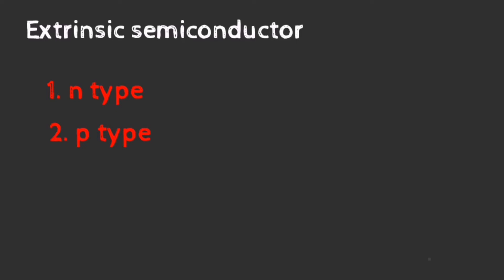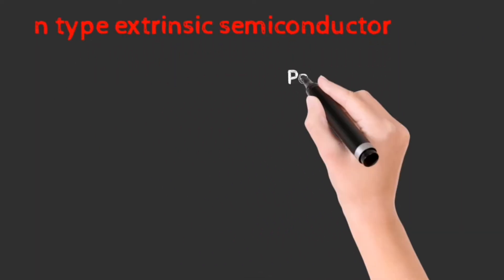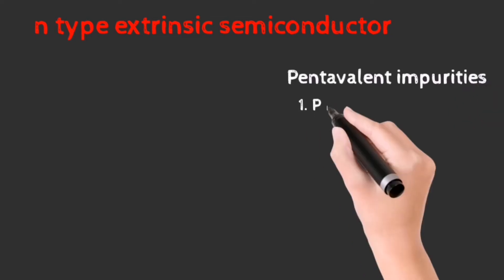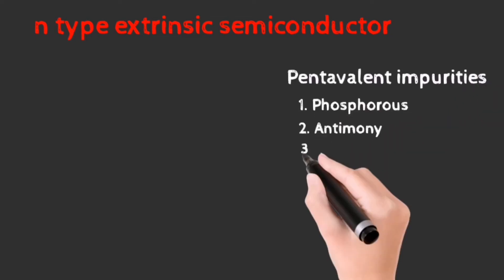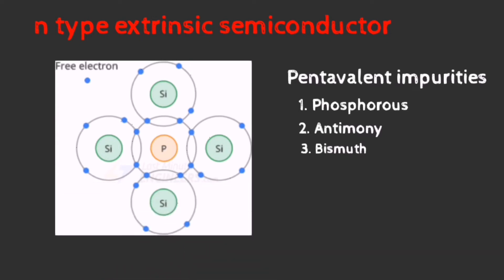N-type extrinsic semiconductors are formed when pentavalent impurities are doped to a pure silicon structure. We have a phosphorus atom added to a silicon structure. As we know, group 5 elements contain 5 electrons in its valence shell. So the 4 electrons of the phosphorus atom form 4 covalent bonds with its neighboring silicon atom, but still a free electron is left which is unbounded and is responsible for conduction.